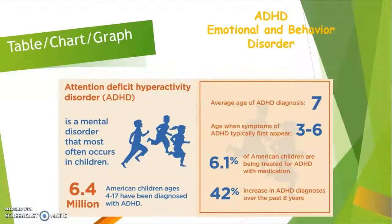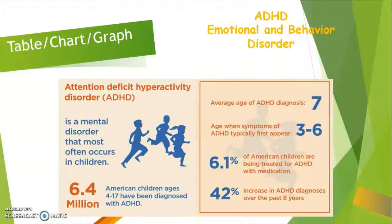Here's a table with information about ADHD. It is the mental disorder that most commonly occurs in children. 6.4 million American children ages 4 to 17 have been diagnosed, with an average age of 7 years old. Symptoms typically appear between ages 3 and 6. 6.1% of American children are being treated for ADHD with medication, and there has been a 42% increase in ADHD diagnoses over the past 8 years.